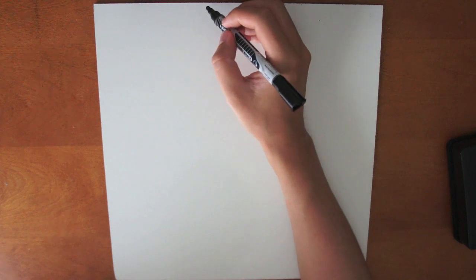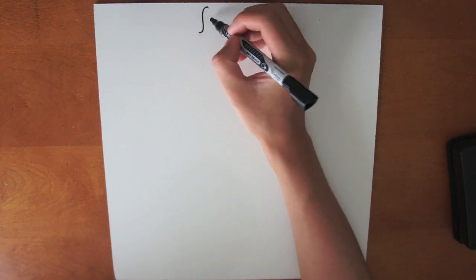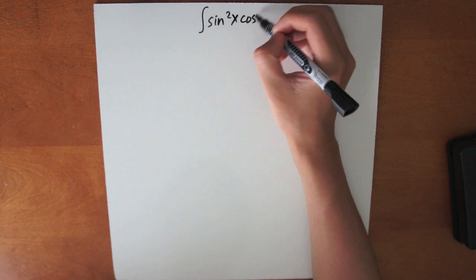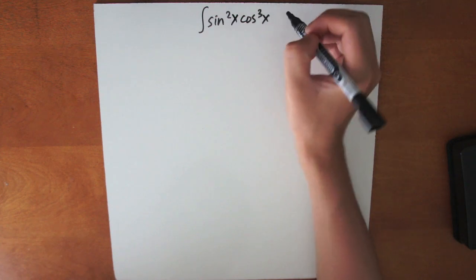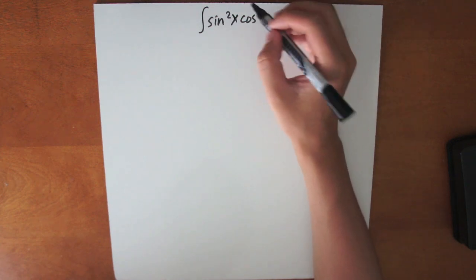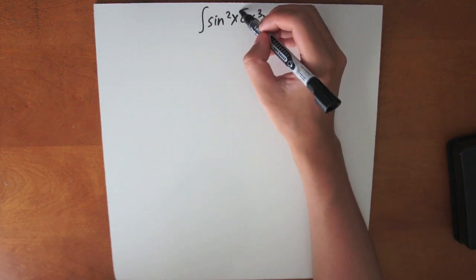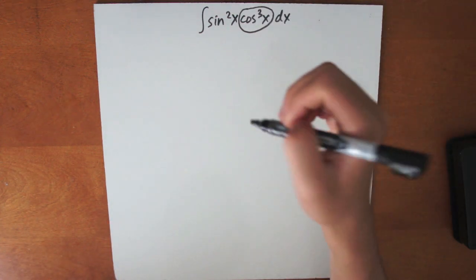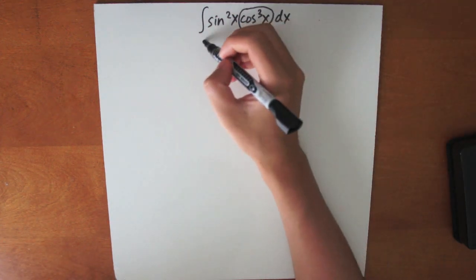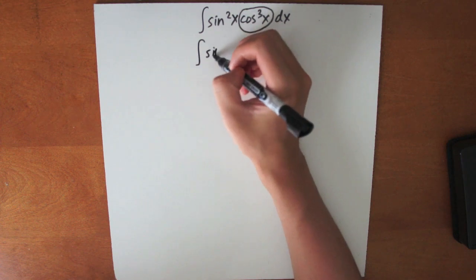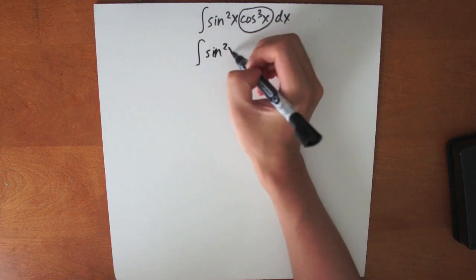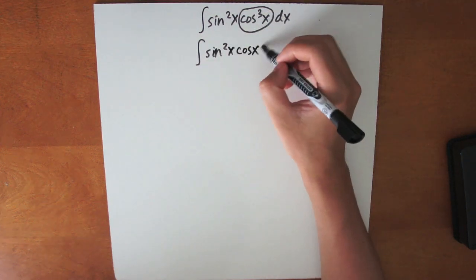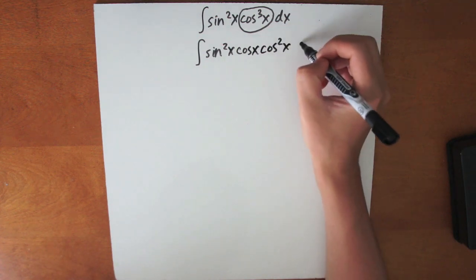So now let's try the example: the integral of sine squared x cosine cubed x dx. We see that cosine has an odd power, so we must siphon off one cosine. So it becomes the integral of sine squared x times cosine x times cosine squared x dx.